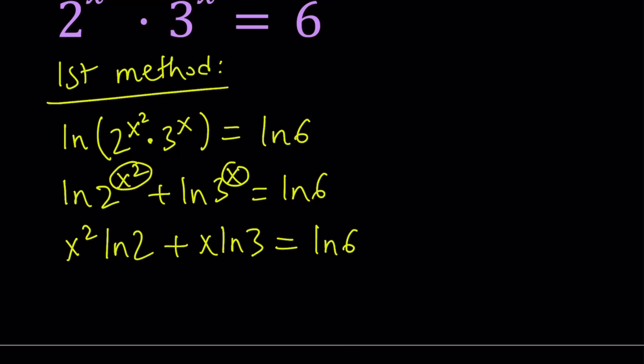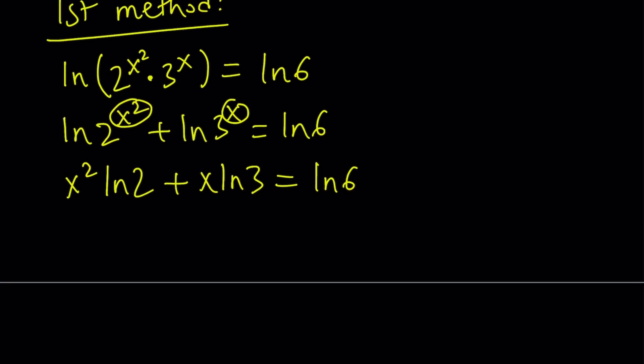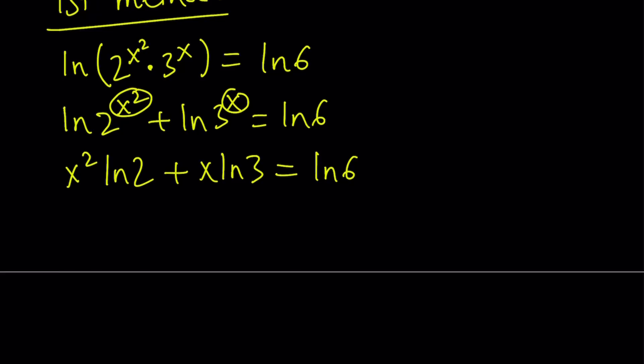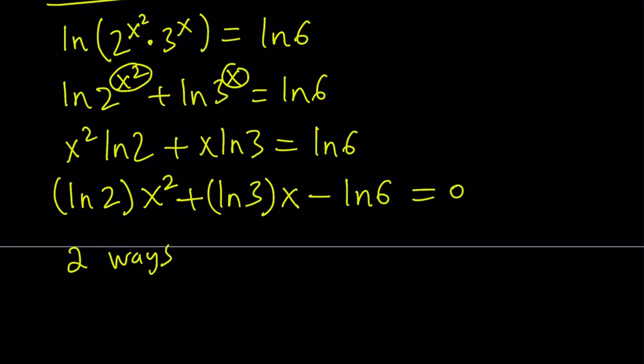When we use logarithms, we have to be careful about the domain. In this case, it's okay because we're only taking logarithms of numbers and they're all well defined. Now, if you look at it carefully, you're going to notice this is a quadratic equation. Let's arrange the coefficients: ln2·x² + ln3·x - ln6 = 0. We have two ways to go about it, 1a and 1b.